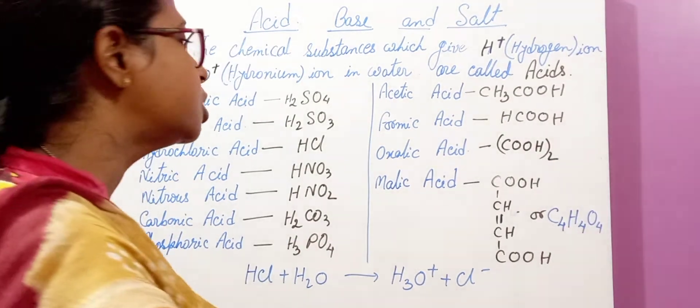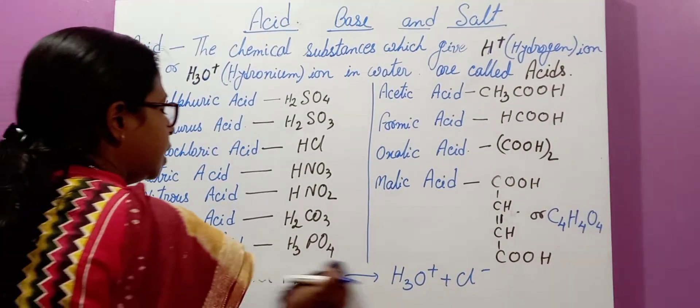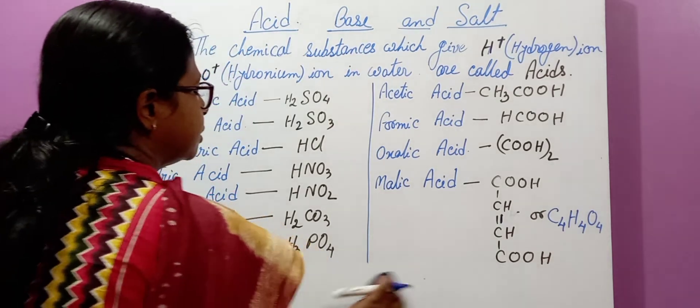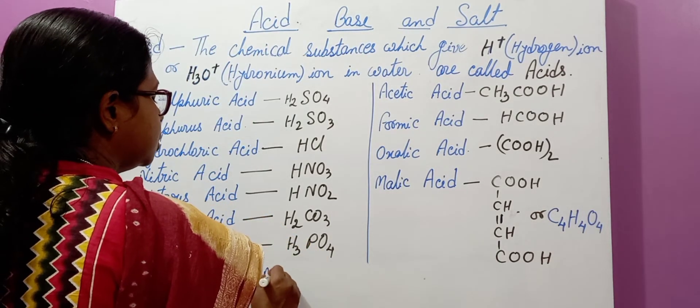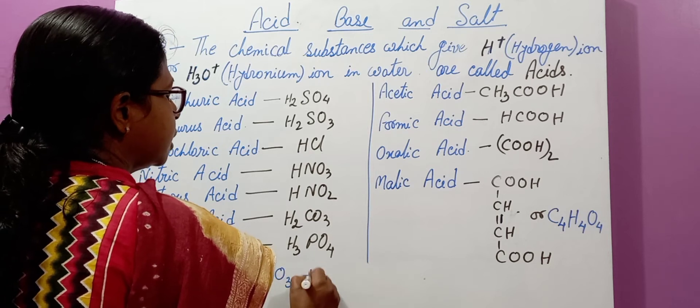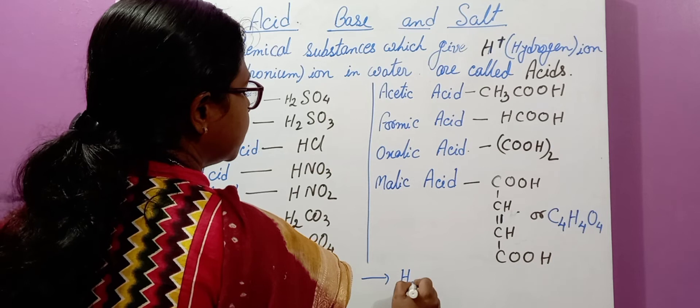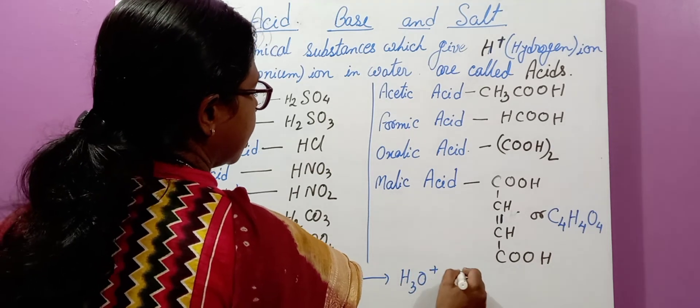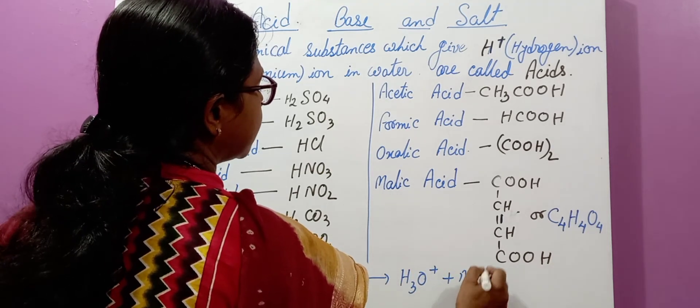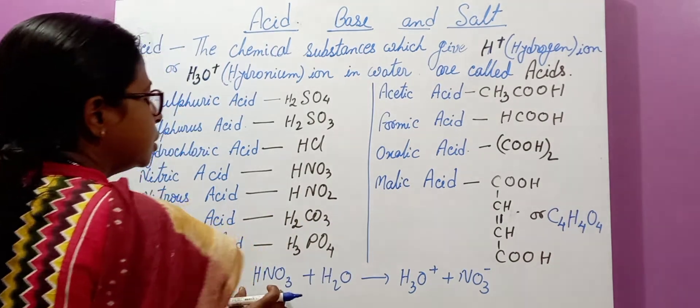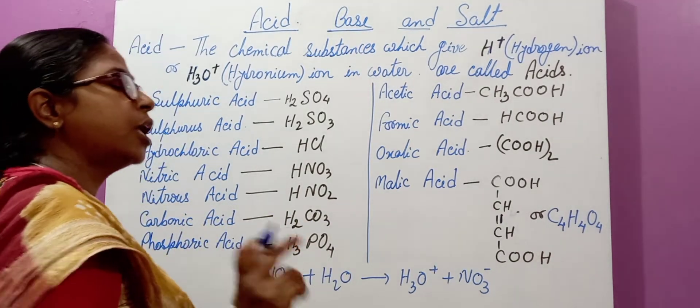Similarly, suppose you take another example like nitric acid. What is the formula of nitric acid? Like HNO3. When you dissolve nitric acid in water, it gives what? H3O+ ion and nitrate ion, NO3- ion. This proves that HNO3 is also an acid.